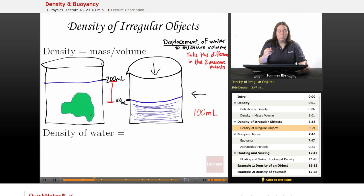One measurement you take before you put the object in the water, right here. And then one measurement you take after you put the object in the water. Subtract it, and we have 100 milliliters.